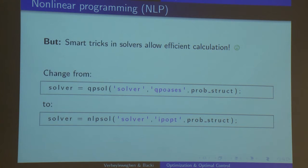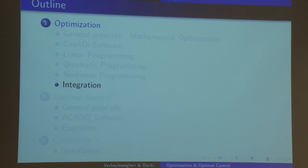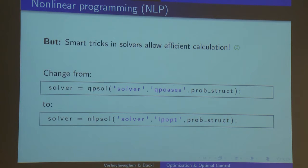How do we treat nonlinear programs in CASADI? Very simply — you write your problem struct, and instead of using QPOASes, you use IPopt, which is a nonlinear solver. QPOASes is a QP solver; IPopt handles NLPs. Just imagine the apple farmer example with some additional weirdness in the cost function or constraints.